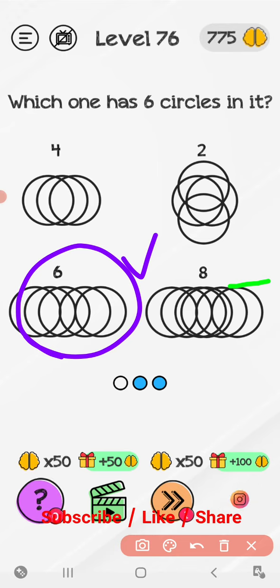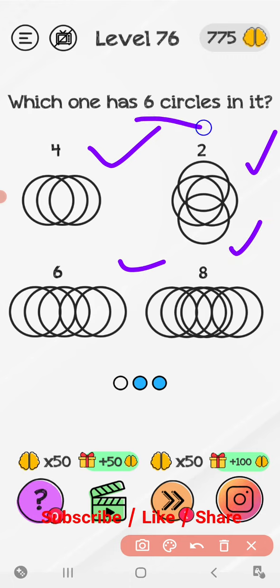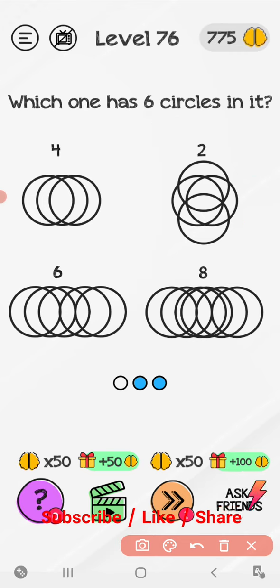Random level 76. Which one has six circles in it? So here we have four options: one, two, three, four. Now we have to find out six circles in it. So here is one, two, three, four only.